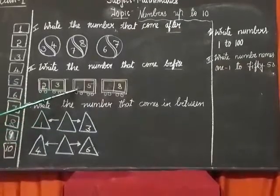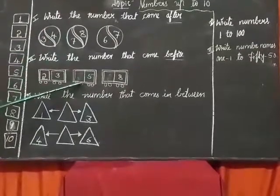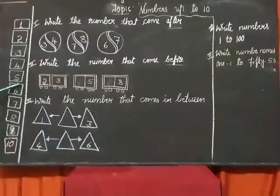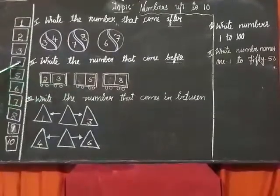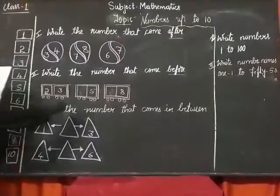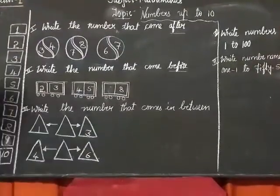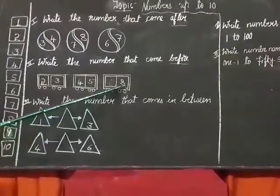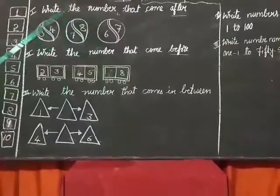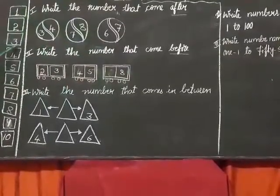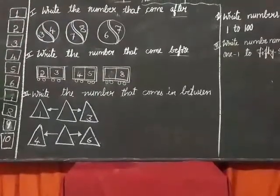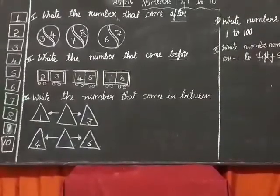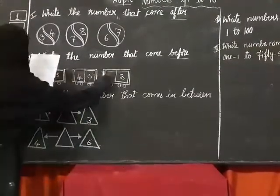Next number is 5. What comes before 5? 4. Yes. We will write 4 in the empty block. Now, see number 8. What comes before 8? 1, 2, 3, 4, 5, 6, 7, 8. So write 7 in the empty block.